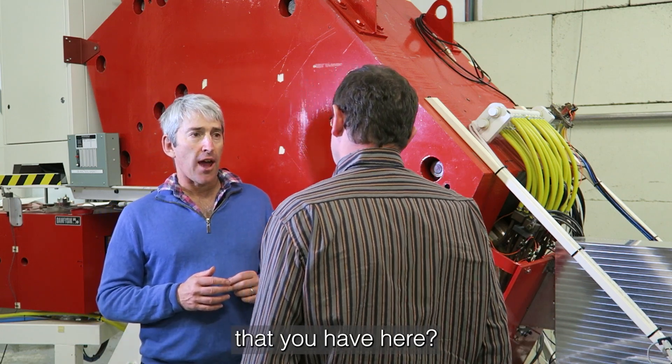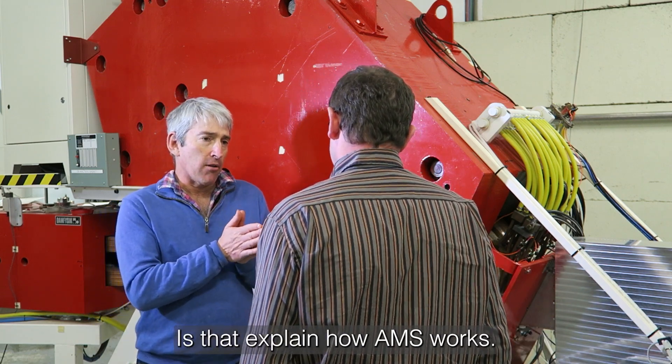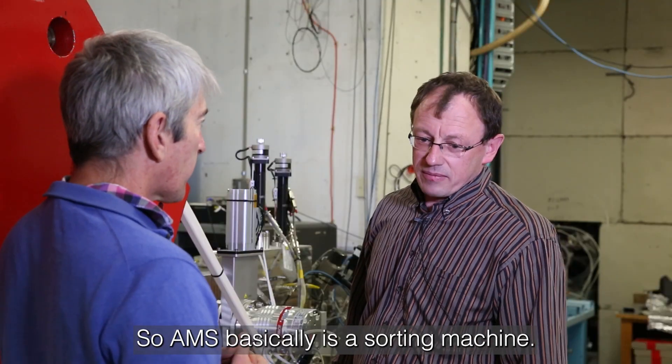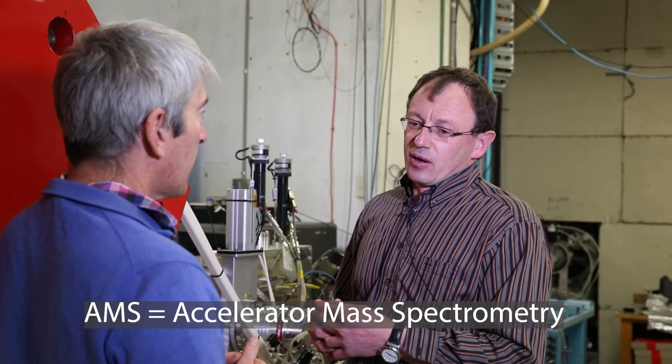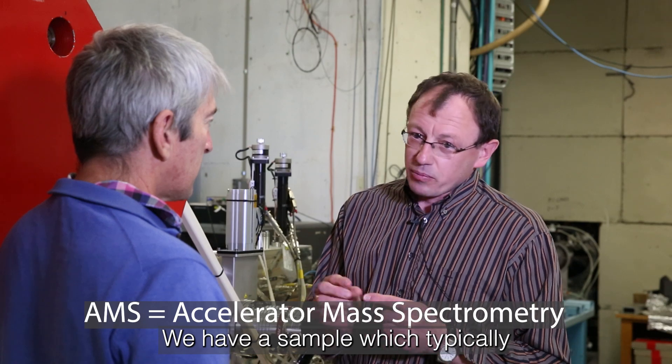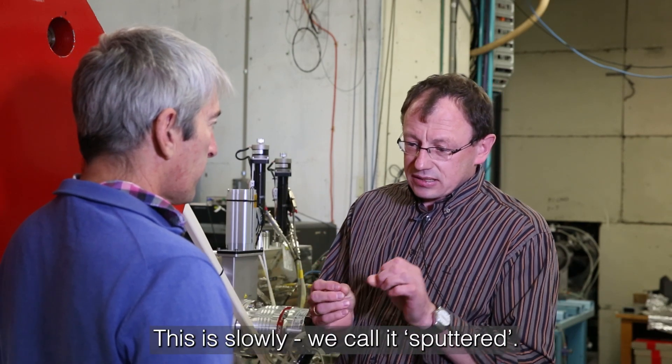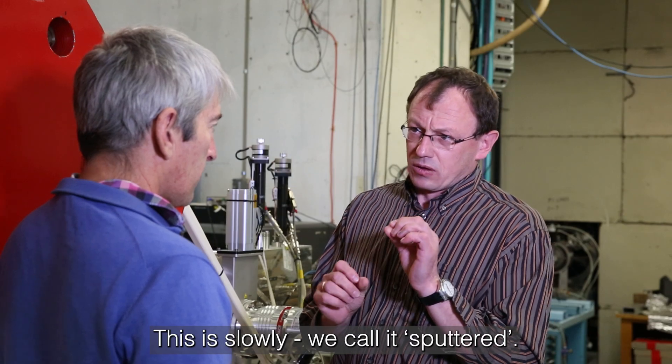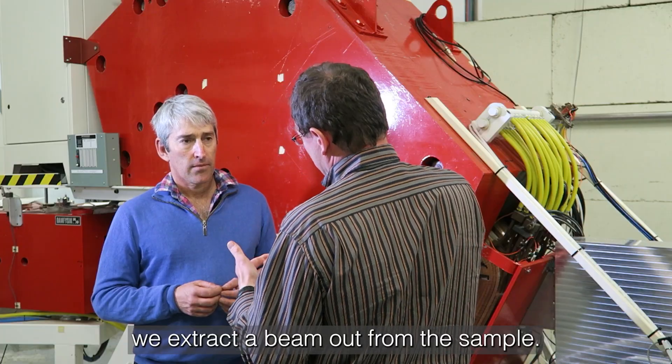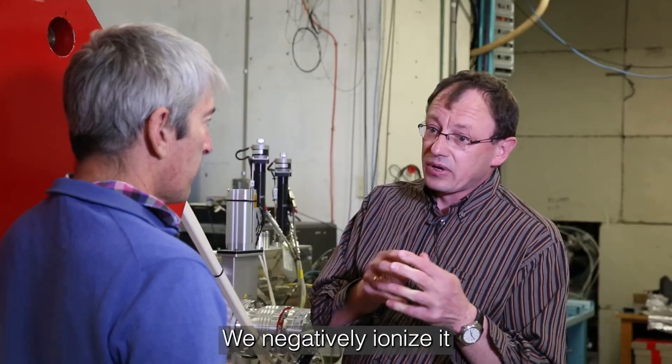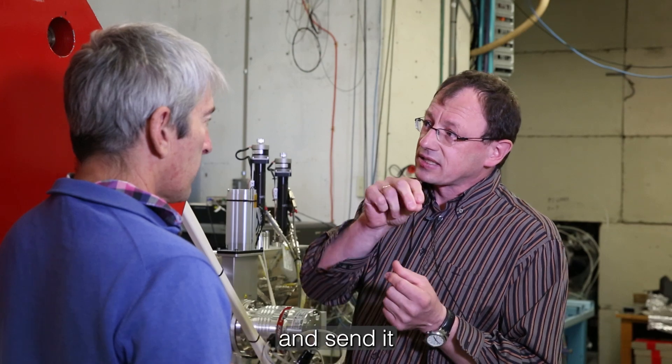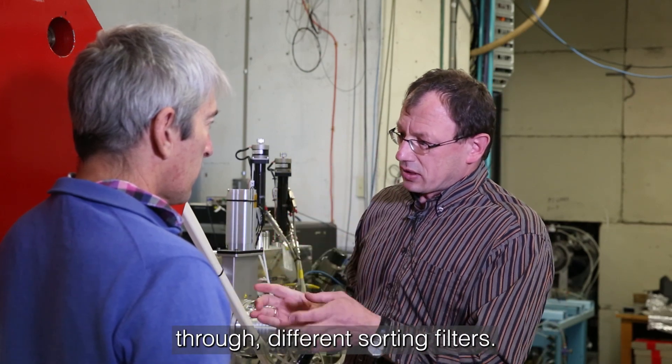So what's the key to getting the super sensitivity that you have here? Explain how AMS works. AMS basically is a sorting machine. We have a sample which typically is of the order of one milligram of material. This is slowly, we call it sputtered, we extract a beam out from the sample, we negatively ionize it and send it through different sorting filters.